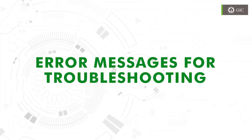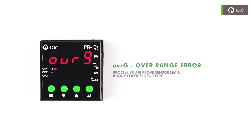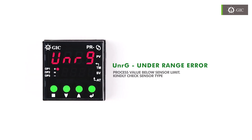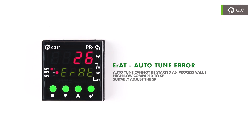Error messages for troubleshooting. SENS stands for sensor break error — that means the sensor is interrupted. Kindly verify the connection between sensor and device and check for sensor type. OVRG stands for over range error — that means the process value is above sensor limit; kindly check sensor type. UNRG stands for under range error — that means the process value is below sensor limit; kindly check sensor type.